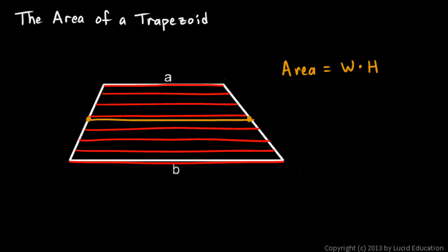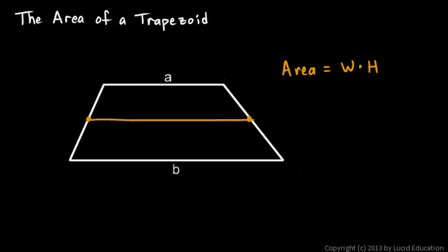That's its widest point, width B. So the width of the trapezoid, as you go from the top to the bottom, gradually increases from width A to width B. The average width would be right in between those two widths.